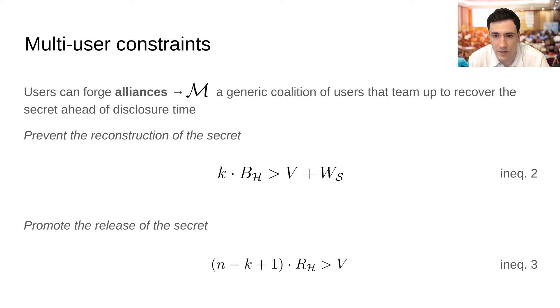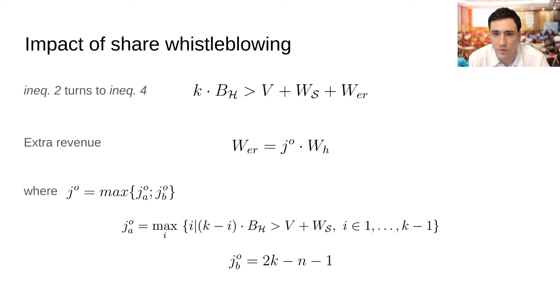This is still not enough, as a coalition could maximize its payoff by submitting to the contract some of the shares before breaking the time lock. Therefore, we have to take into account the extra revenue WER that can be gained by M, submitting to the contract an optimal number of shares. The extra revenue modifies inequality too, and in order to compute it, we need to determine the optimal number of the shares, JO, to be submitted to the contract.